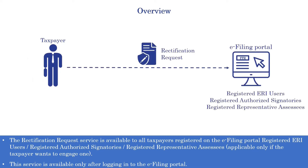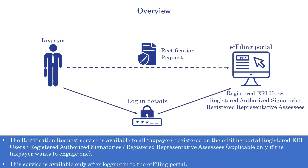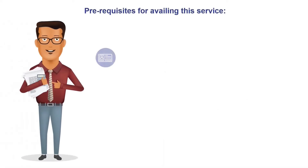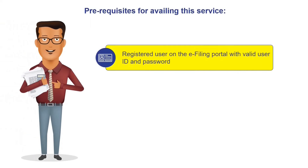The service is available to registered ERI users, registered authorized signatories, and registered representative assessees in case the taxpayer wants to engage one. The service is available only after login to the e-filing portal. For filing a rectification request, you should be a registered user on the e-filing portal with a valid user ID and password.